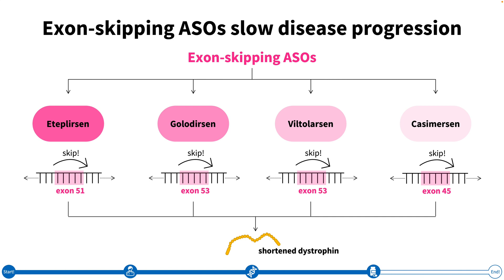Keep in mind that these genetic approaches cannot be used for all individuals with Duchenne, but only those with DNA changes that can be addressed by skipping either exon 51, 53, or 45. It's also important to remember that they are a treatment and not a cure. Exon-skipping ASOs may slow the progression of Duchenne, but cannot fully restore muscle function. With more research, we hope that even better genetic treatments will continue to be made to help individuals with Duchenne live longer and healthier lives.